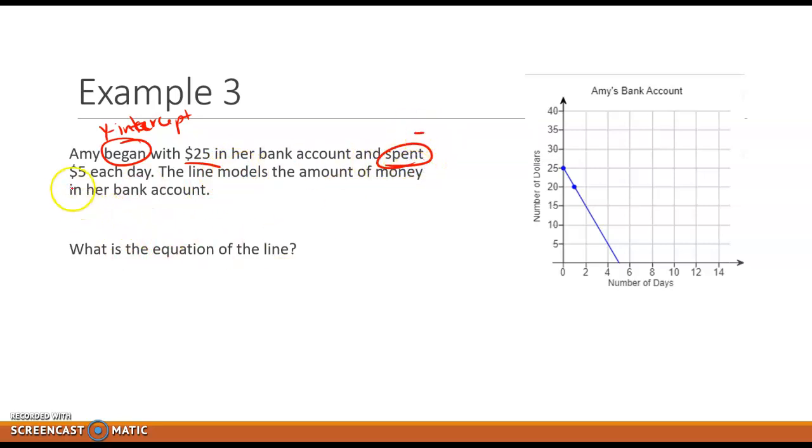So Amy began with $25 in her bank account and spent, that means we're going negative, right? $5 each day. That each is an indication of slope, right? Because that's a rate of change. The line models the amount of money in her bank account. And it wants to know what's the equation of the line. Okay, well, here we are starting at 25, right? And I could go down to this point here. And so I know that my b is 25. And then, now I have to be careful in counting this one. This is 5, 10. So I've got 10. And it's down 10. And I'm going over 2, because each box is 2 here. So down 10 over 2, which is equal to negative 5. So I'd end up with y equals negative 5x plus 25.